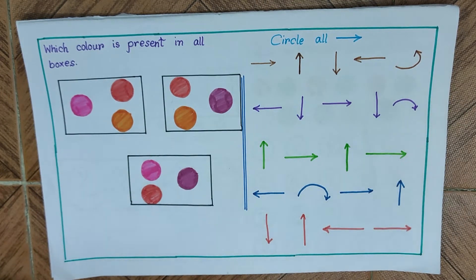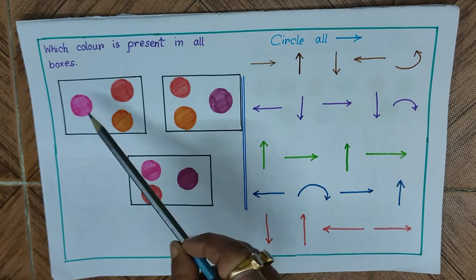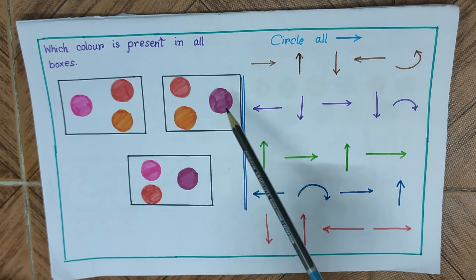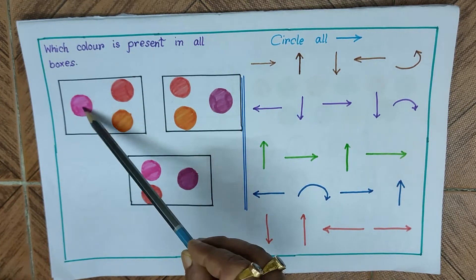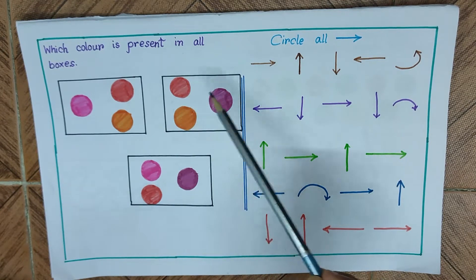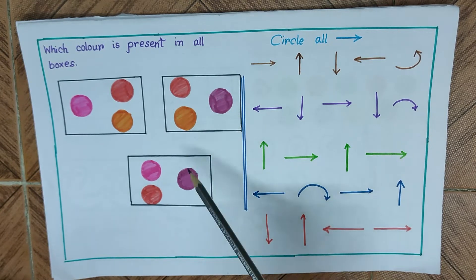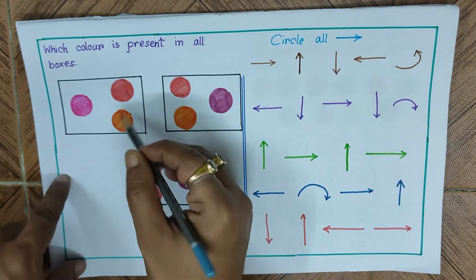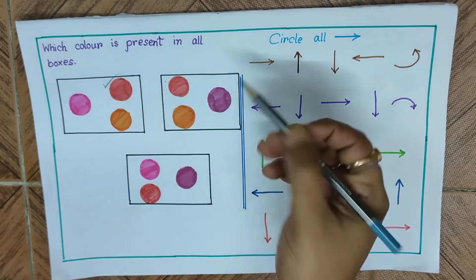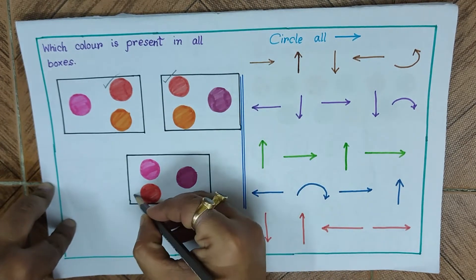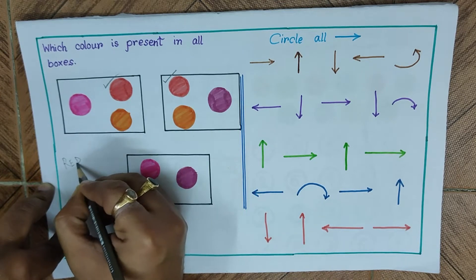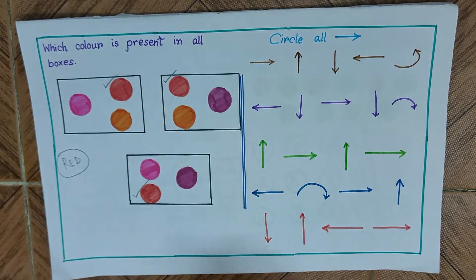The first page has two questions. The first question on the left asks: which color is present in all boxes? We have three boxes, each with three circles filled with some colors. For example: pink, red, orange; red, orange, violet; violet, red, and pink. The common color found in all three boxes is red.